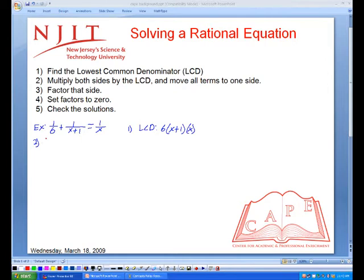So we multiply through by the lowest common denominator. And you can start to see already that some things will cancel out. And this is why we multiply through by the lowest common denominator. So 6 and 6 cancels, x plus 1, x plus 1 cancels, x and x cancel.